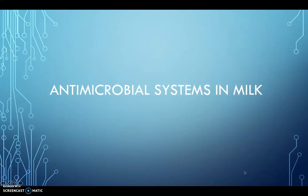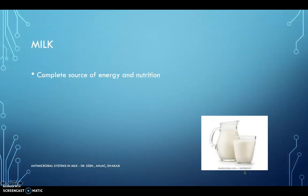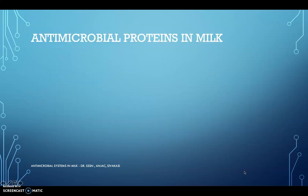Good morning. Today we are going to see about the antimicrobial systems in milk. Milk is a complete source of energy and nutrition. It varies from species to species — cow, goat, buffalo, sheep, and others. It is a white color liquid consisting of water, fat, proteins, carbohydrates, vitamins, and minerals. It possesses lots of therapeutic value, especially antimicrobial activity.